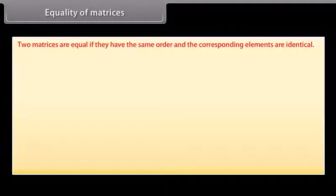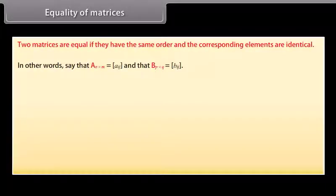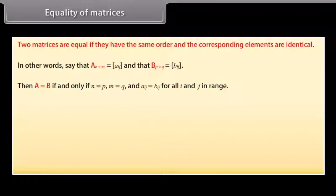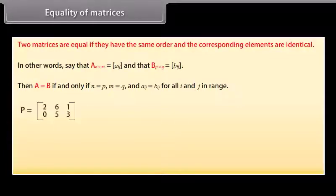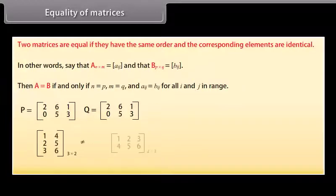Equality of matrices. Two matrices are equal if they have the same order and the corresponding elements are identical. That is, matrix A (M by N) equals matrix B (P by Q) if and only if M equals P, N equals Q, and A_ij equals B_ij for all i and j in range. Matrices P and Q shown here are equal. Two matrices with the same elements but different order are not equal.